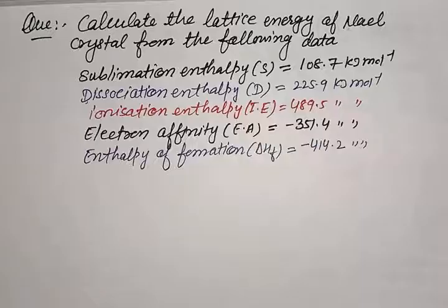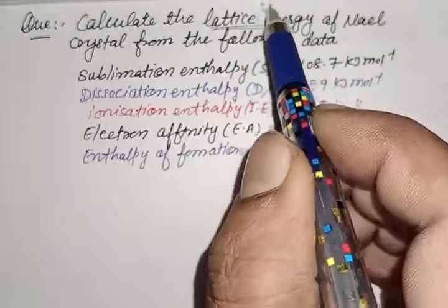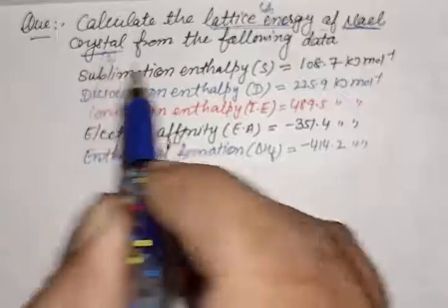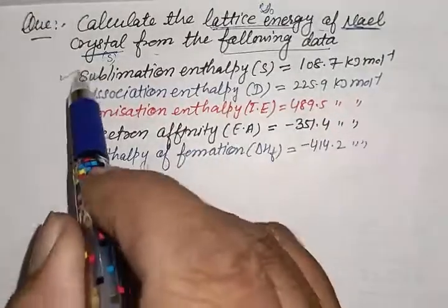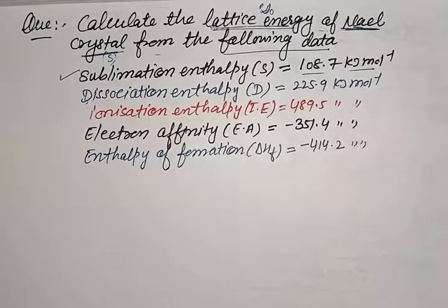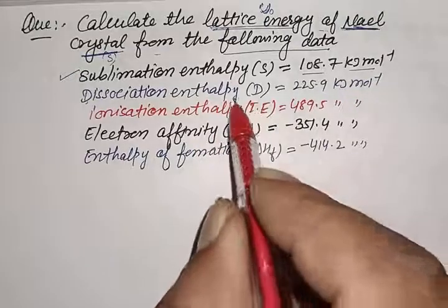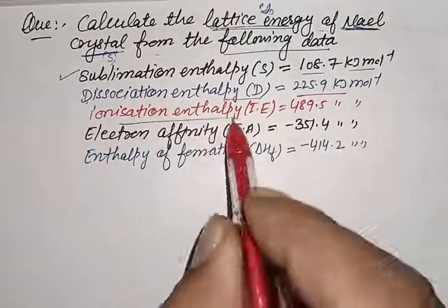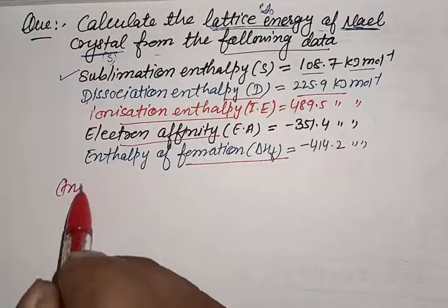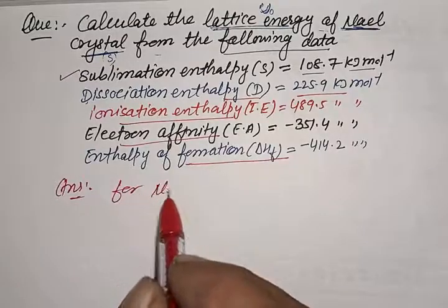Let's study a numerical based on the lattice enthalpy using the Born-Haber Cycle. Calculate the lattice enthalpy of NaCl crystal from the following data. The enthalpy of sublimation, enthalpy of dissociation, enthalpy of ionization, electron affinity, and enthalpy of formation are all given in kilojoules per mole.